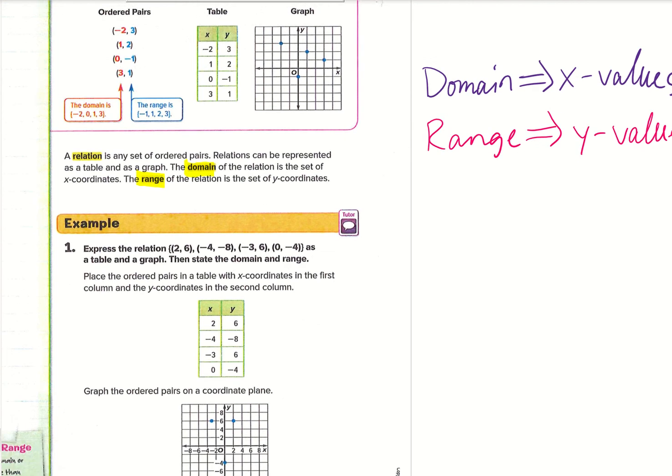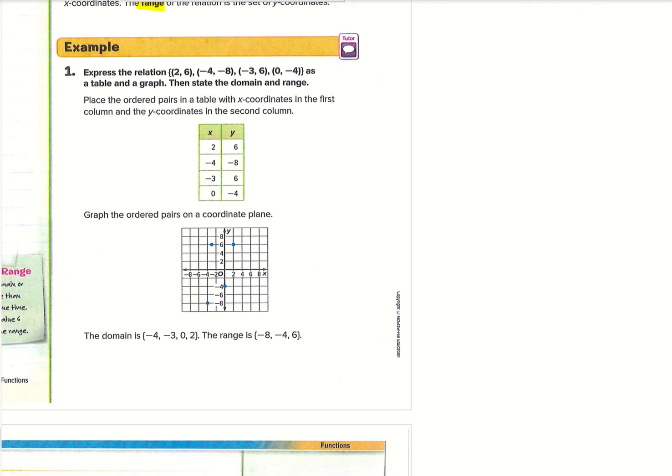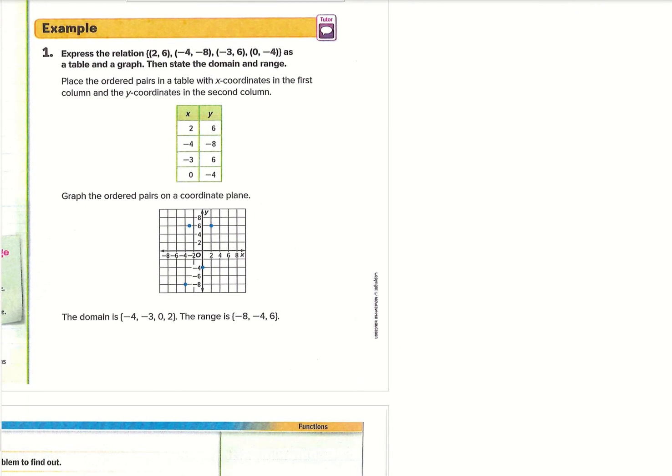So we'll go ahead and jump straight down to example one. It says express the relation, and then it gives all the ordered pairs as a table and a graph, then state the domain and the range.